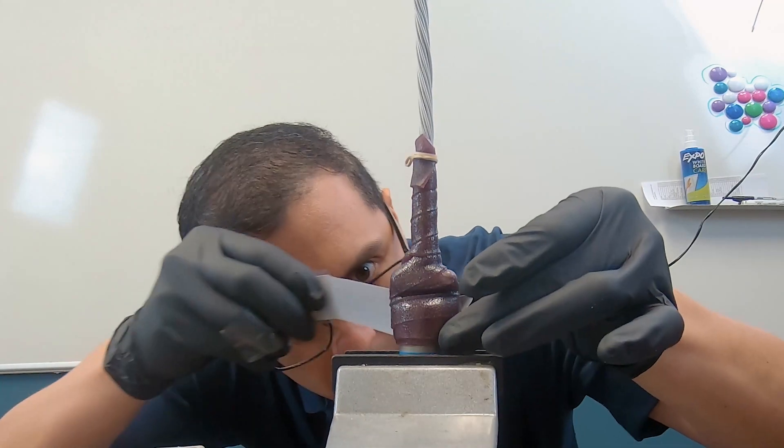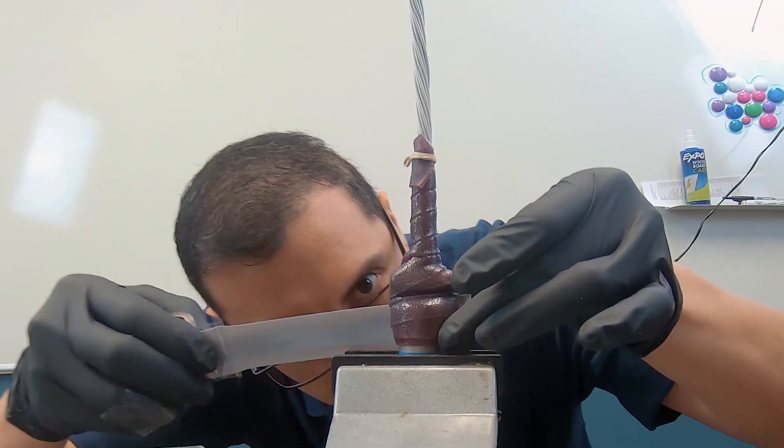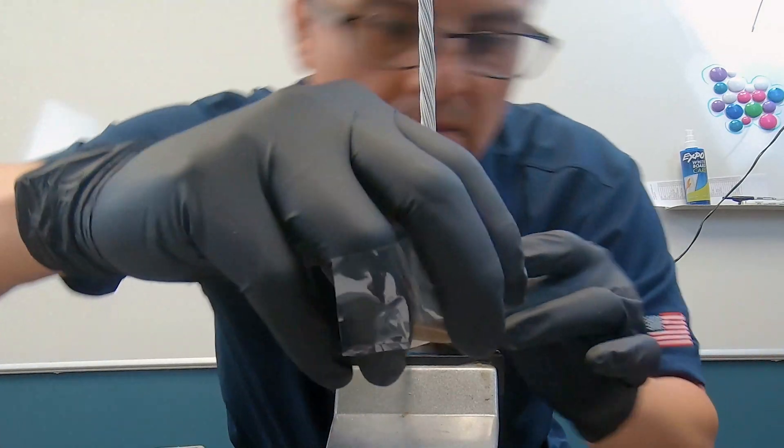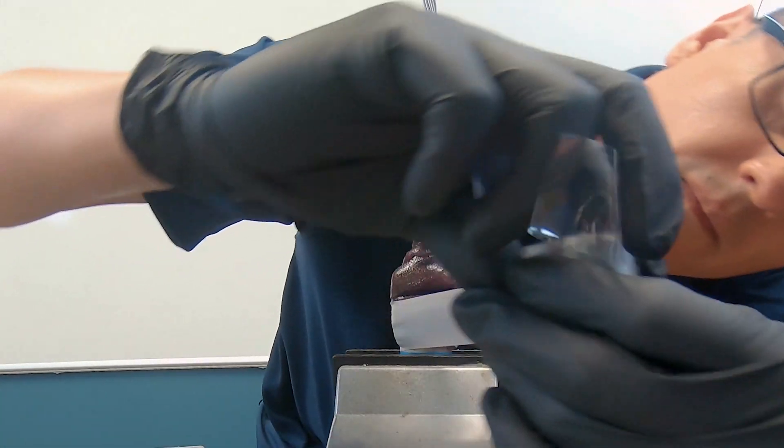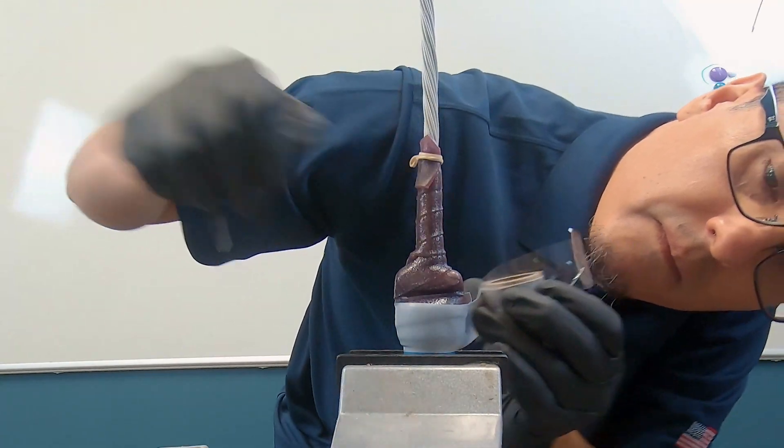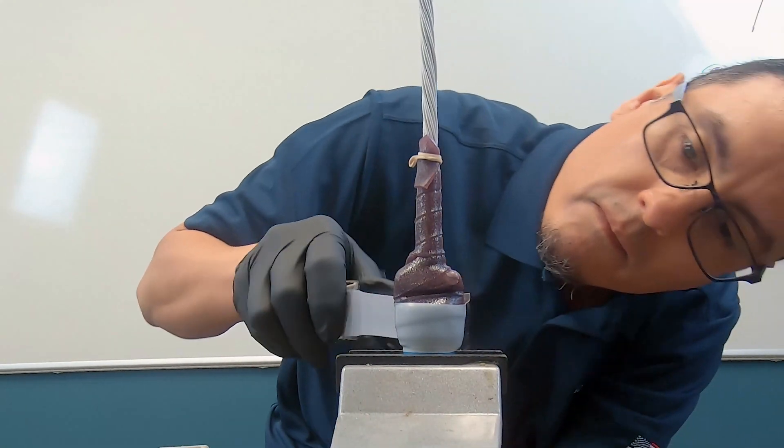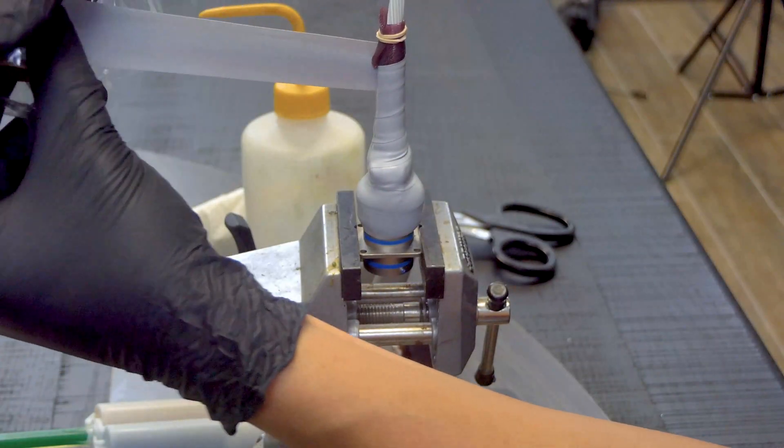Use the line in the middle of the self-fusing silicone tape as a guide. Stretch the self-fusing silicone tape 50 to 300% during application to ensure a tight fit when complete.